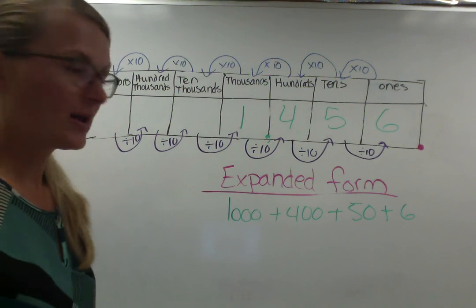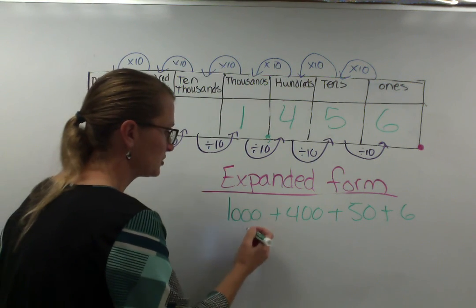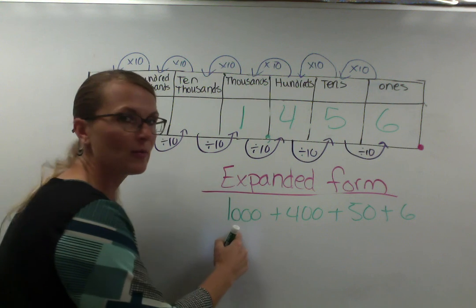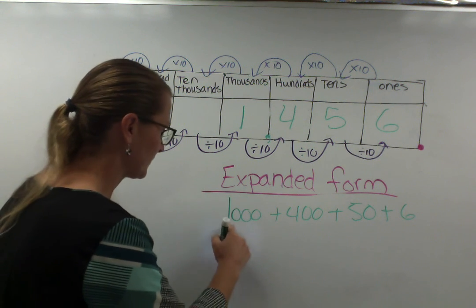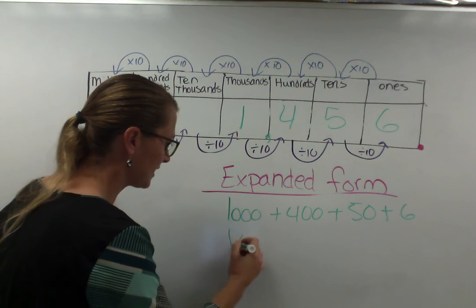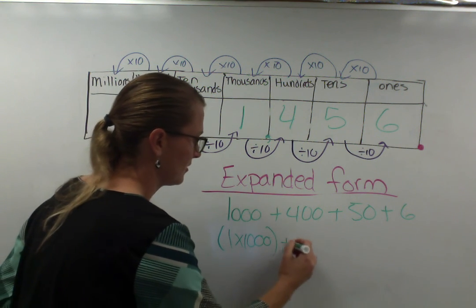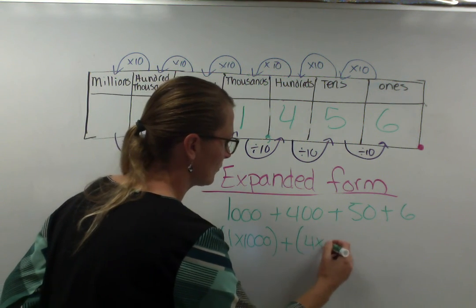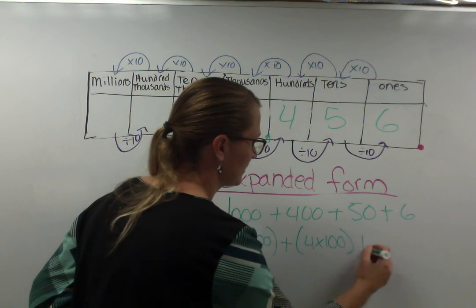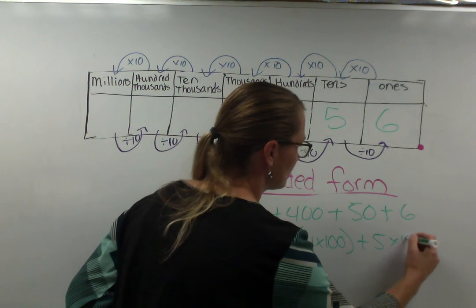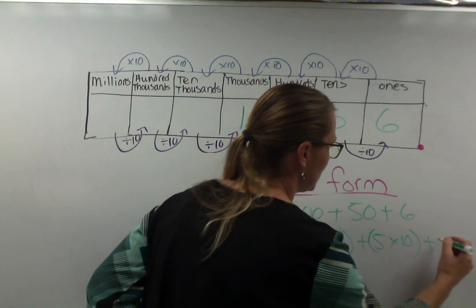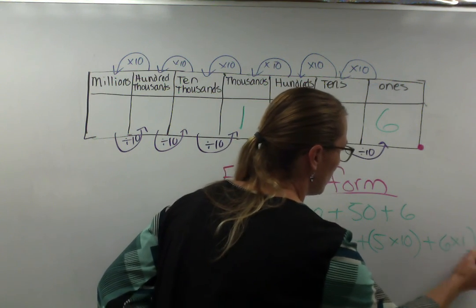Now we get to what I called fifth grade expanded form, which is where we not only write the value, but we write how we get each value. So 1000 is really one group of 1000 plus four groups of 100 plus five groups of 10 plus six groups of one.